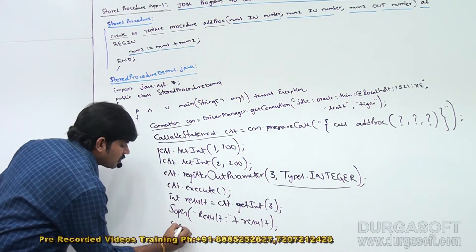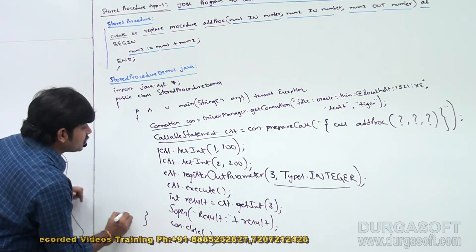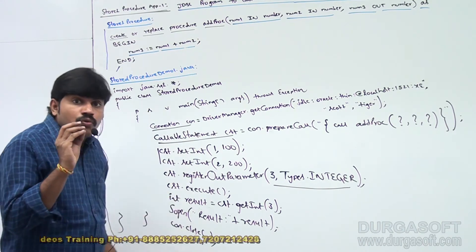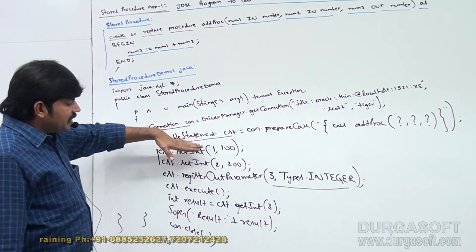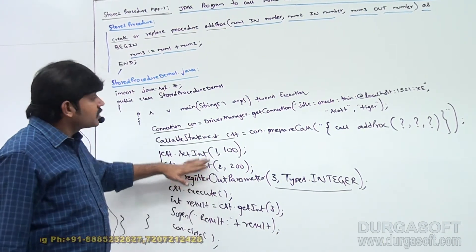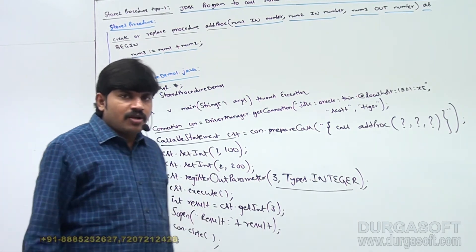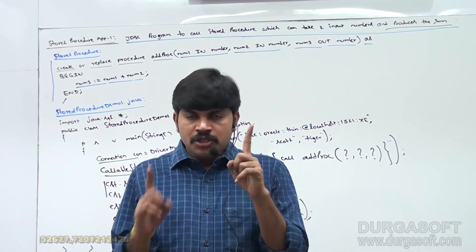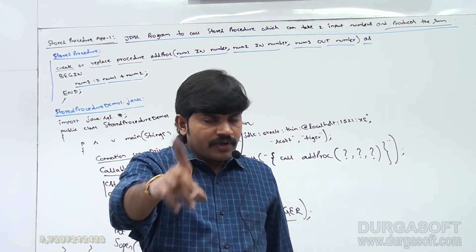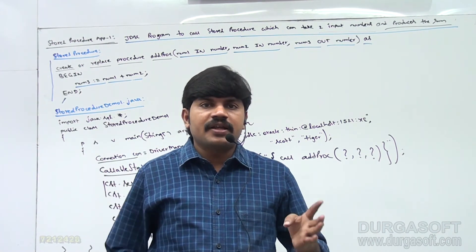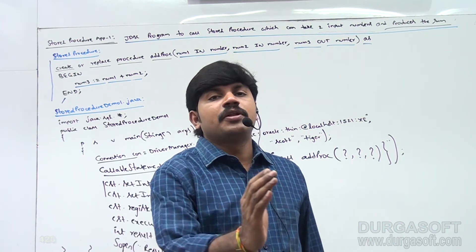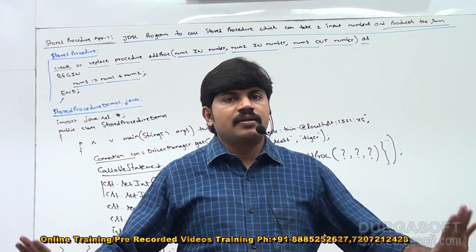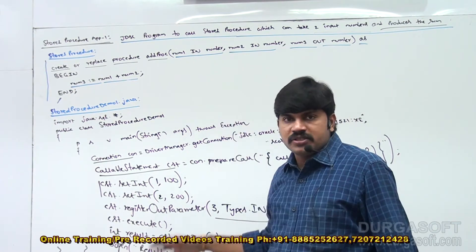Then close the connection: con.close(). That's all. This is a simple example of how to write a JDBC application to call a stored procedure. To summarize the process: step one, make sure your stored procedure is ready in the database; step two, create a CallableStatement; for every IN parameter provide input values; for every OUT parameter register with the JDBC type; execute; and get the result.